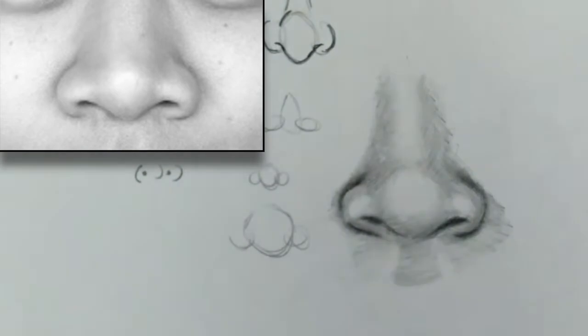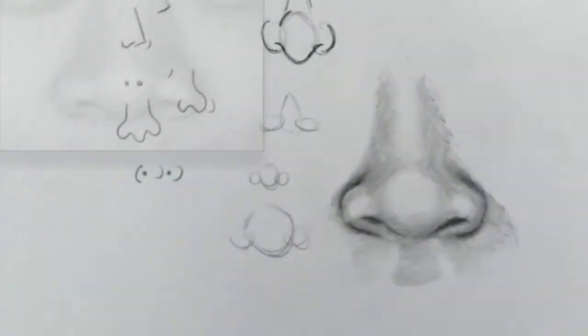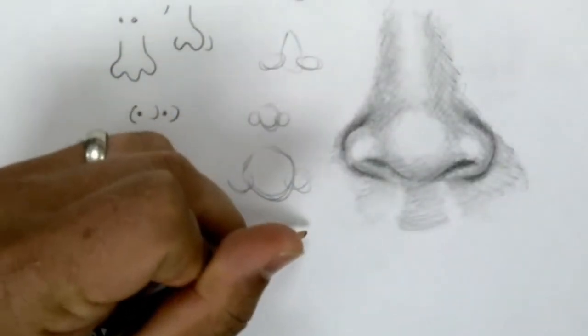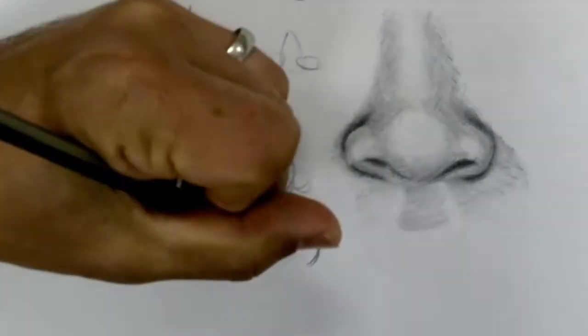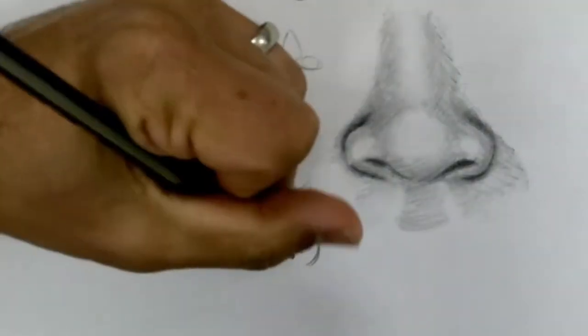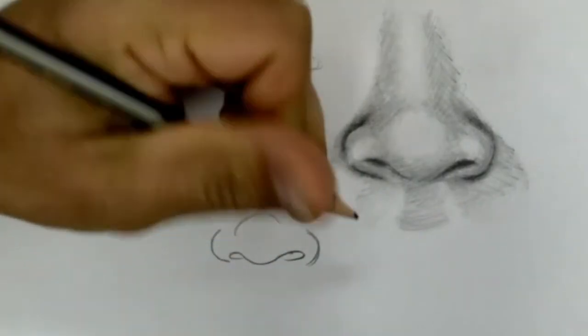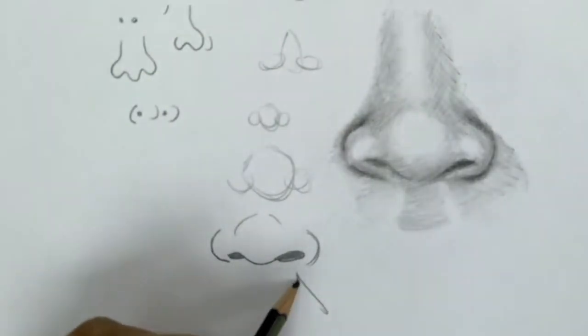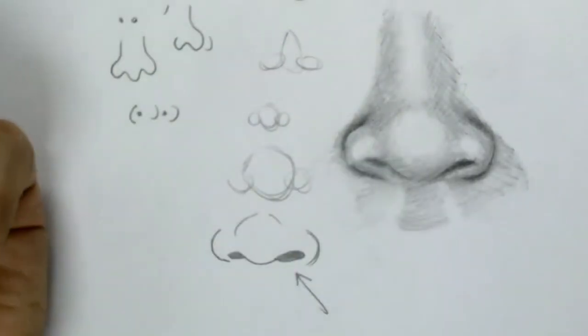One thing I sometimes notice young artists do—they'll draw a nose and then they'll loop the nostrils around and actually fill in a dark hole. That's definitely going to make it cartoonish, so be careful with that. It's like a well, so there's a shadow that fades out, not a distinct shape.